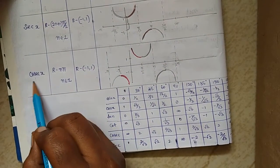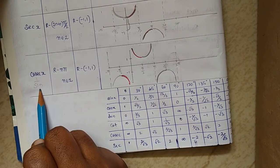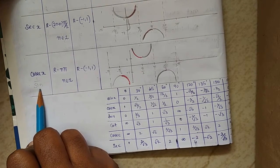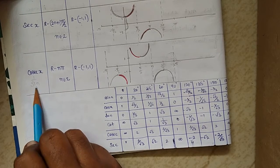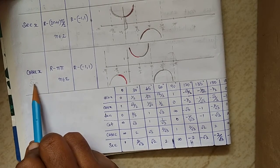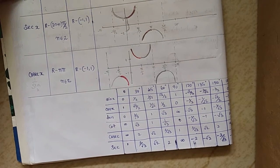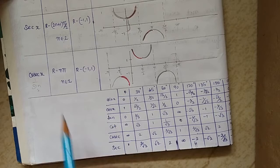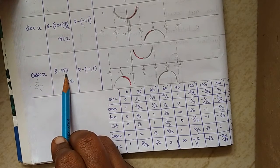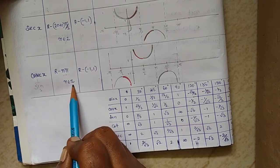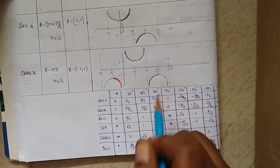The cosecant function is 1/sine. So wherever the sine value is not defined or zero, we have to remove those points. The sine function is getting zero at 0 and 180 degrees, so we remove nπ where n belongs to integers. The domain is R minus {nπ}.